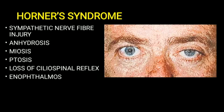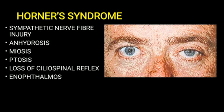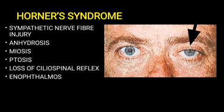Horner syndrome, or oculosympathetic paresis, is caused by paralysis of sympathetic fibers. Its features include anhydrosis, miosis, ptosis, loss of ciliospinal reflexes, and enophthalmos. Muller's muscle (superior tarsal muscle), supplied by sympathetic fibers, is affected in Horner syndrome, causing ptosis — drooping of the upper eyelid. These are the most important clinical anatomy points with respect to the extraocular muscles.